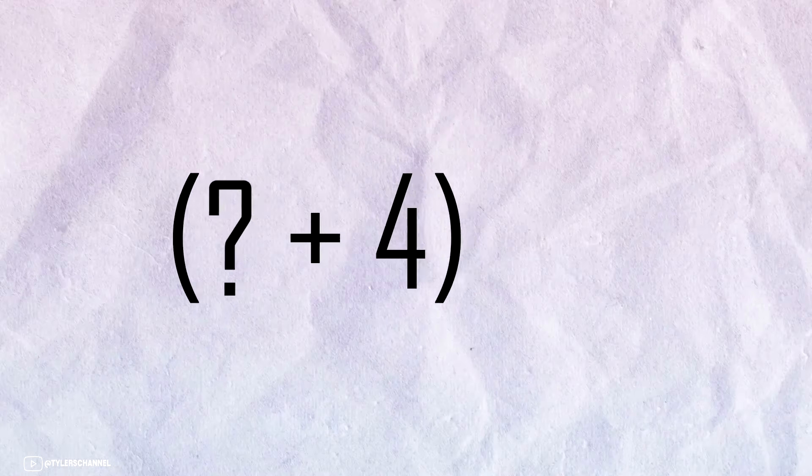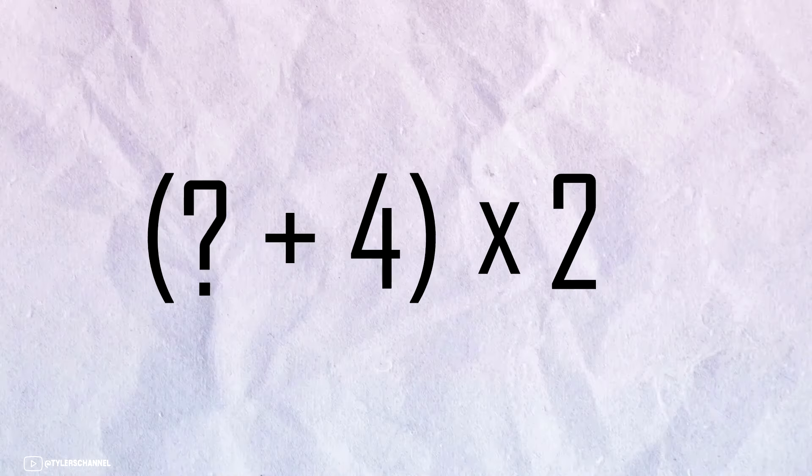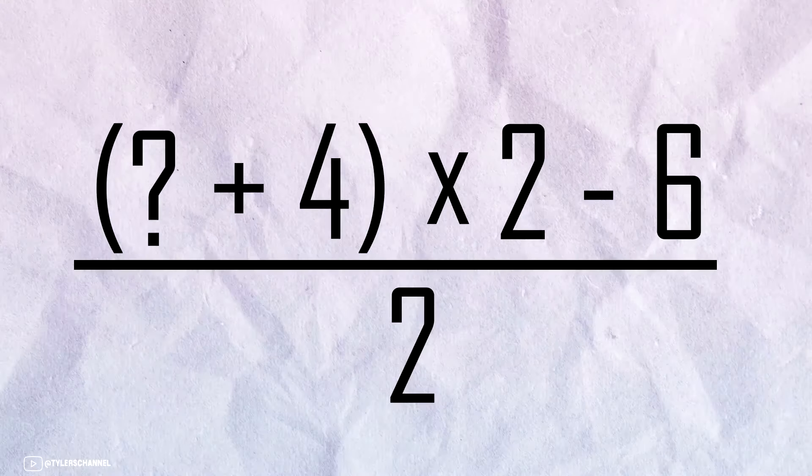Pick any number from 1 to 23 and picture it in your head. Once you have your number, add 4 and double the result by 2. After that subtract 6 and then divide by 2.